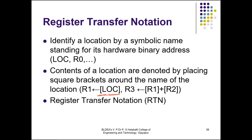All RTN statements have an arrow symbol whose left side is the destination and the right side is the source. Source contents are not modified, whereas destination contents are changed after an operation. For example, the RTN statement R1 ← [LOC] transfers the content of memory location LOC into processor register R1. The content of LOC is not changed, but the previous content of R1 is lost — the new value is overwritten.